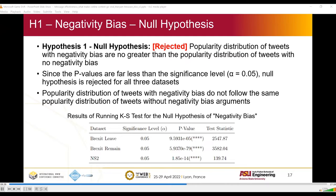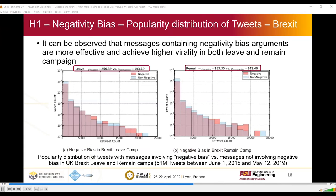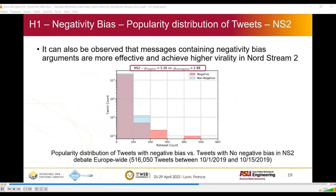As we can see from the results in this table, since the p-value is far less than the significance level, the null hypothesis is rejected for all three datasets. This means that tweets having a negativity bias and tweets not having a negativity bias do not follow the same distribution. As shown in the tweet count versus retweet count graph, on average, the messages containing a negativity bias are more effective and achieve higher virality in both Brexit leave and remain camps, and the same result holds in the Nord Stream 2 data as well.